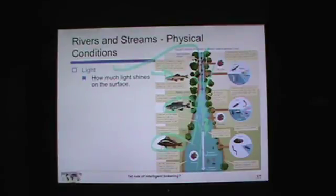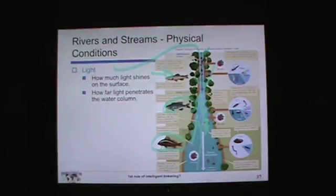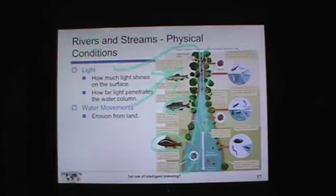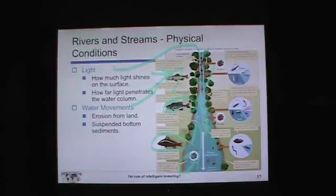The further downstream you go, the more light shines on the surface because you have a broader, slower river. How far that light penetrates depends on how much suspended load — how much stuff — is in the water. The same 80% absorbed in first 10 meters rule applies. Water moves much faster upstream than downstream. Rivers often carry a very large sediment load — the Mississippi, the Big Muddy, has always been brown because it erodes most of the Great Plains and carries tremendous sediment loads, continuously re-suspending that bottom mud.